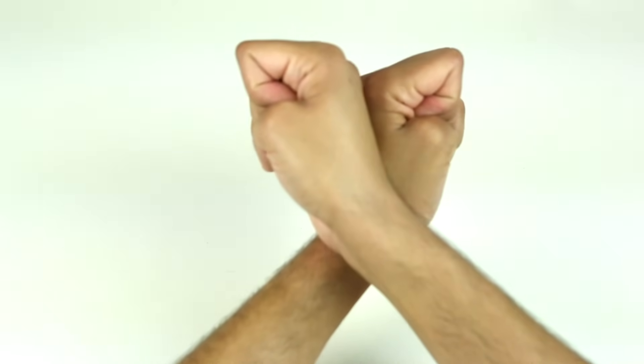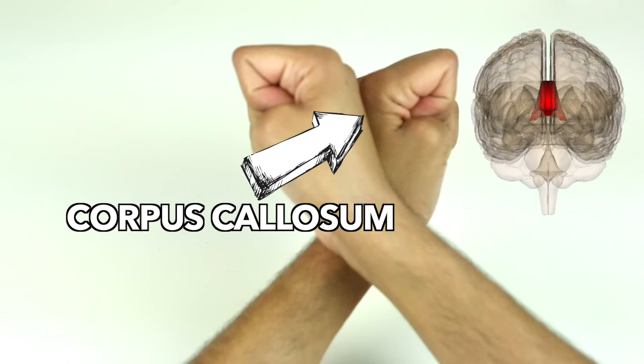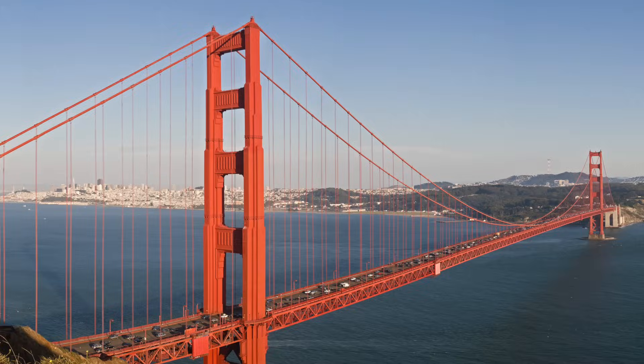Look closer at your hands. The area where they touch represents the corpus callosum. The corpus callosum is a bundle of nerves that connect the two hemispheres of the brain and help them to communicate with each other. I like to think of it as the golden gate bridge of the brain.